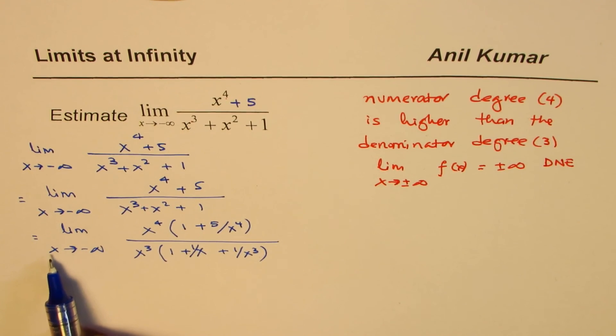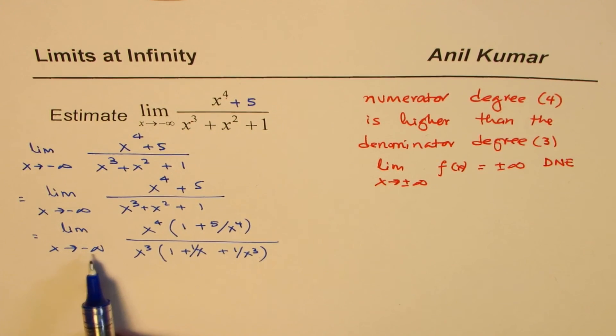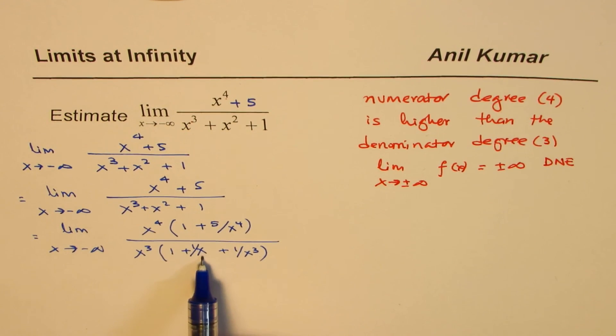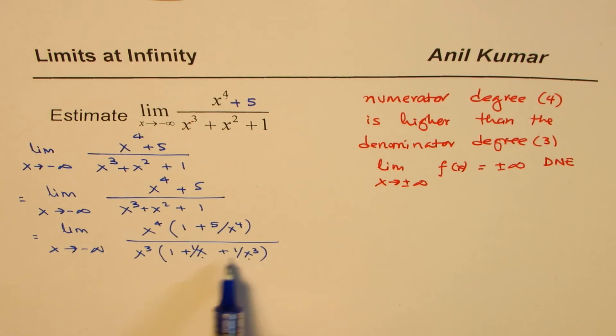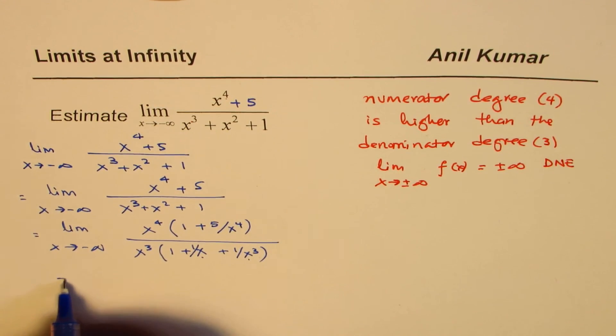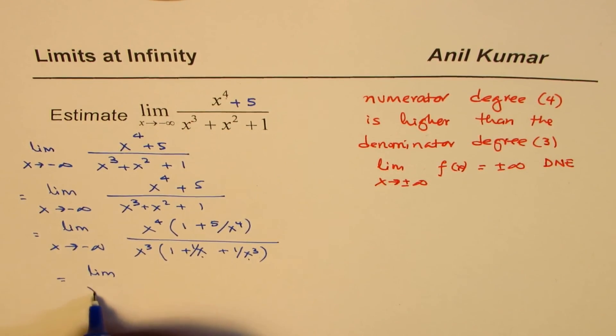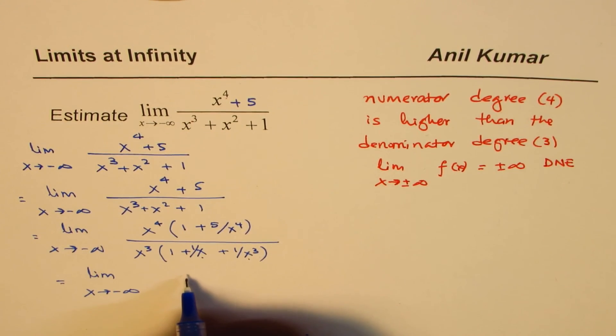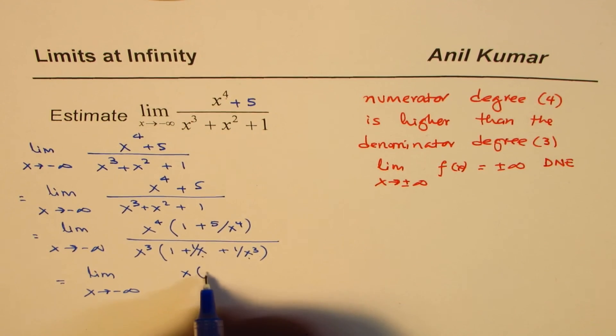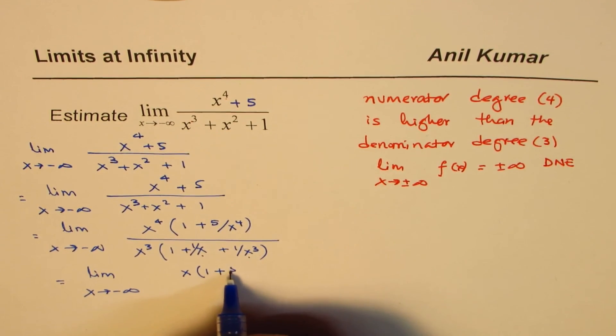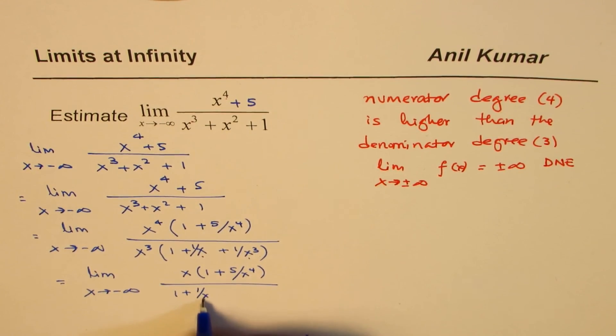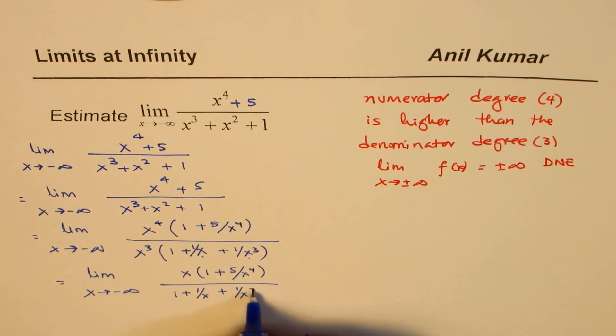Now as you can see, if x is approaching large infinity, then this term, 5 divided by a large number, will approach 0. And these terms also will approach 0. That is important to understand. So what we have here is limit x approaches negative infinity. You can simplify this, and you get x times 1 plus 5 over x to the power of 4. And here you get 1 plus 1 over x plus 1 over x cubed.